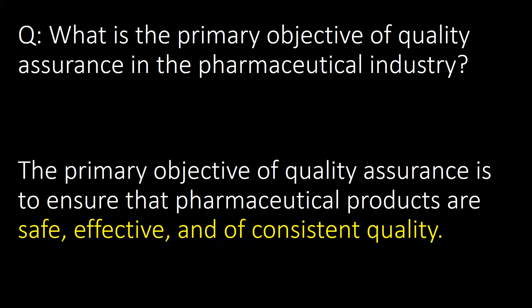What is the primary objective of quality assurance in the pharmaceutical industry? The primary objective of quality assurance is to ensure that pharmaceutical products are safe, effective, and of consistent quality.